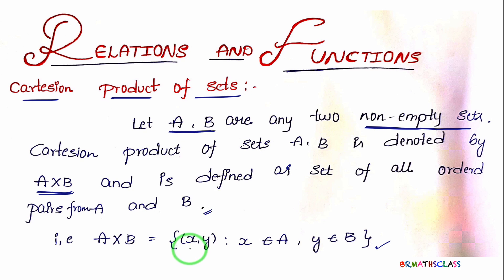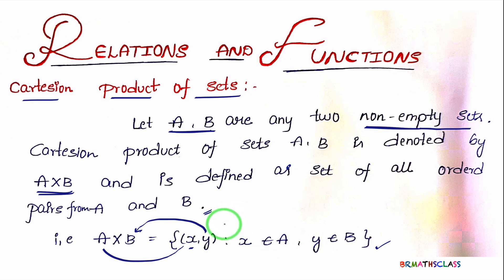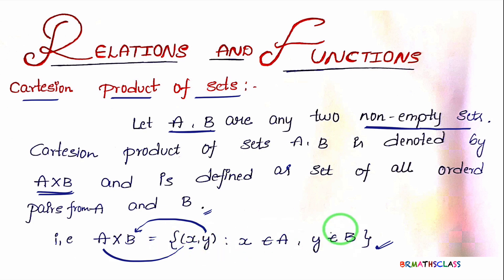It is called an ordered pair because the first element belongs to set A and the second element belongs to set B. X belongs to A and Y belongs to B. In an examination, if they ask the definition of Cartesian product of sets, you should write: A cross B equals the set of all ordered pairs X comma Y such that X belongs to A and Y belongs to B.